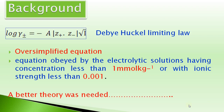A better theory was needed to explain the behavior of strong electrolytes which could not be accounted for by Debye-Huckel theory at higher concentrations. Lars Onsager modified Debye-Huckel theory to make it better.